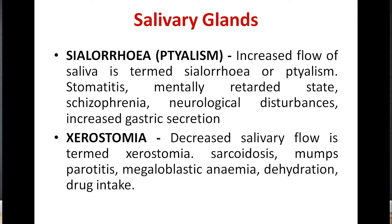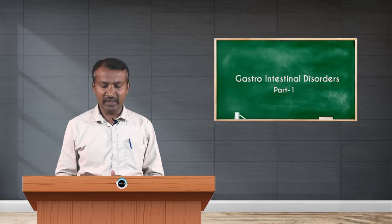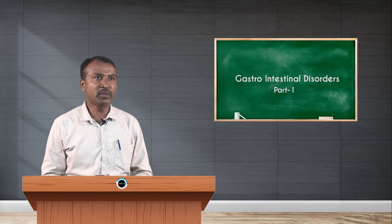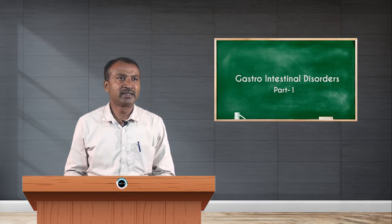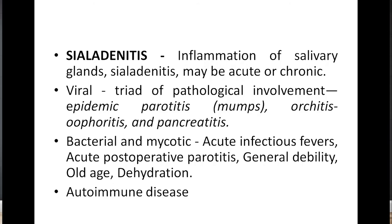The diseases in which we see xerostomia are sarcoidosis, mumps, parotitis, megaloblastic anemia, dehydration, and narcotic drug intake. There is a term called sialadenitis, which is inflammation of the salivary glands. It may be acute or chronic.